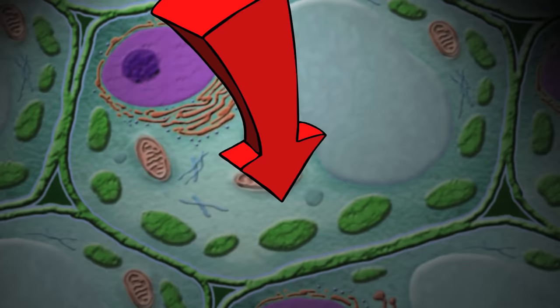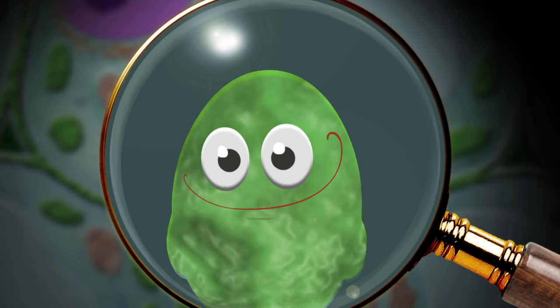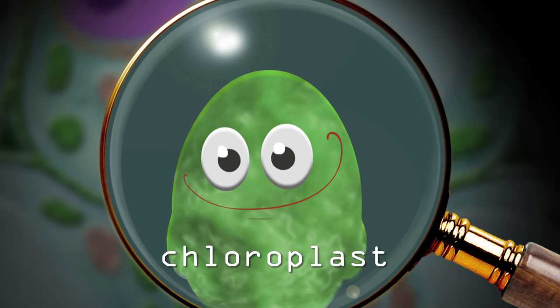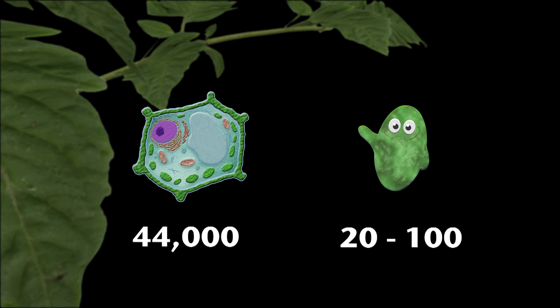That's a special plant organelle inside the leaves of plants called a chloroplast. It's green because of a special light-absorbing pigment called chlorophyll. Each leaf has about 44,000 cells and every cell can have anywhere between 20 to 100 chloroplasts.